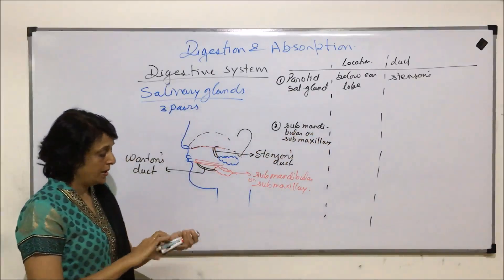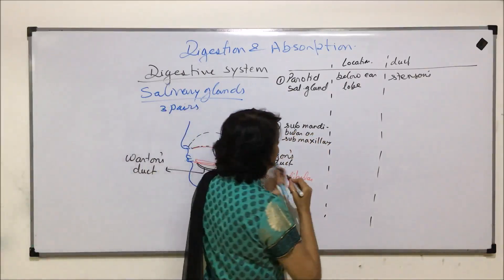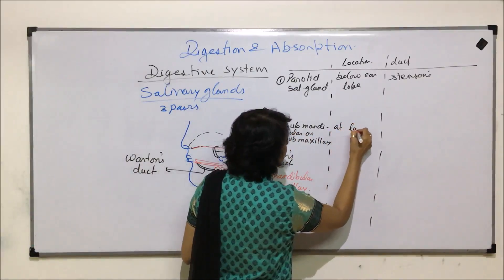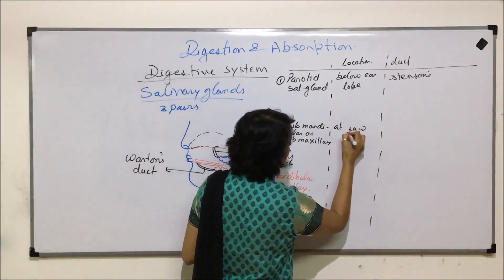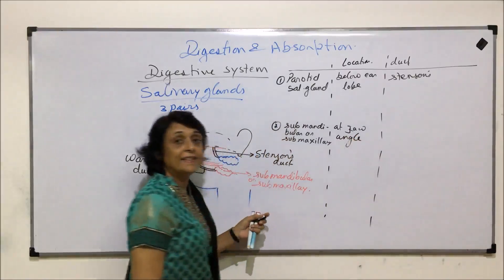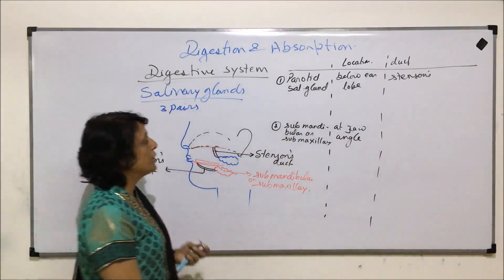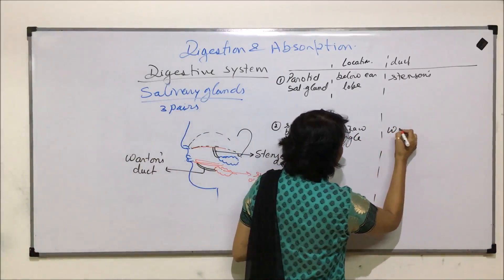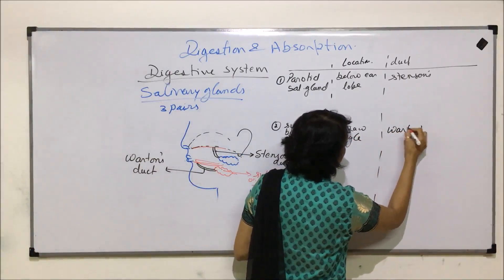The submandibular or submaxillary gland is located at the jaw angle, and the duct with which it pours its secretion is known as Wharton's duct.